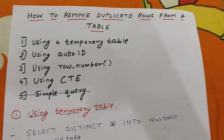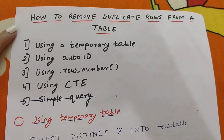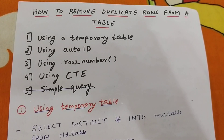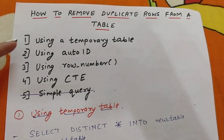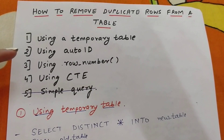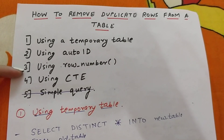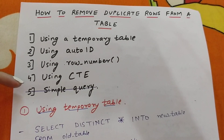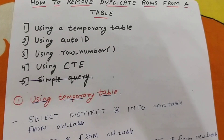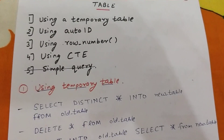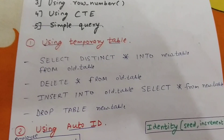In today's video we'll understand how to remove duplicate rows from a table. There are four ways to do so: first is using a temporary table, second is using auto ID, third is using row number, fourth is using CTE. Let's understand each one of them one by one.